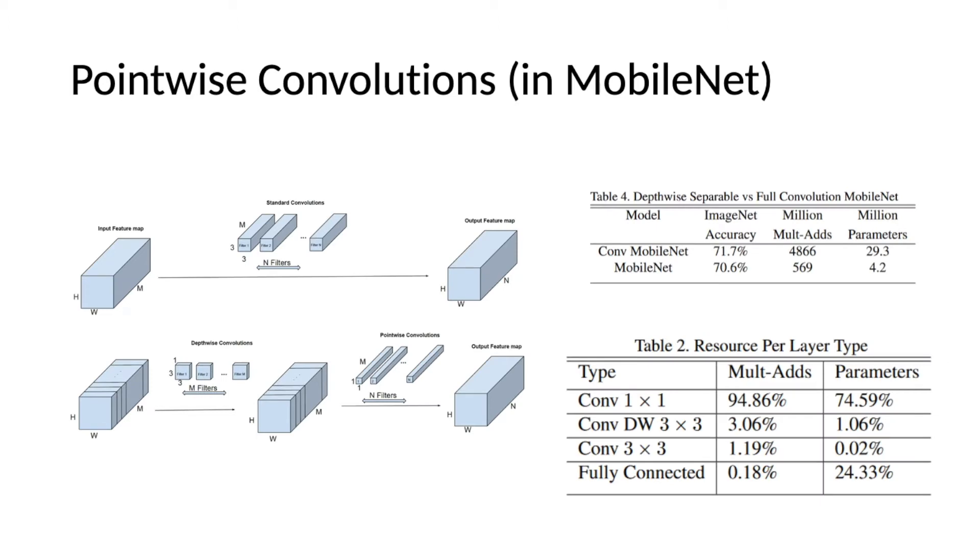Separating convolutions into a depth-wise and a point-wise convolution saves significant amount of computation. Point-wise convolutions contribute about 94% of the flops in MobileNet. In this work, we explore whether we can reduce the computation of point-wise convolutions.